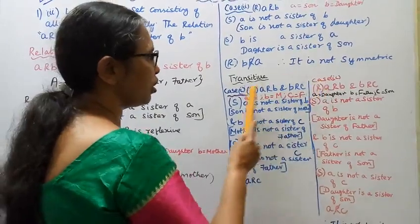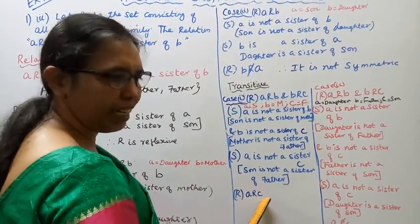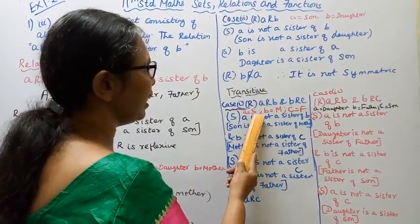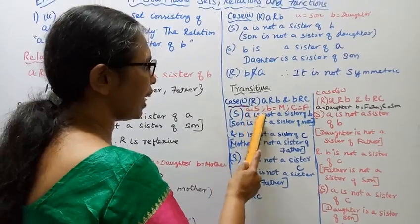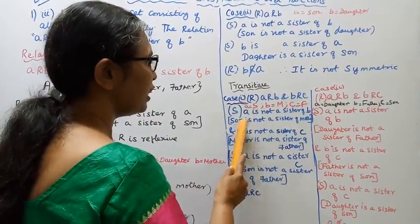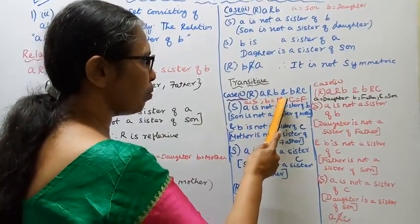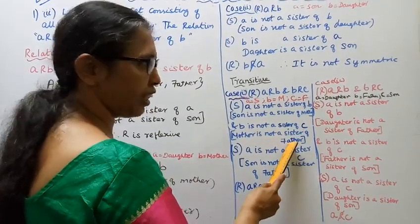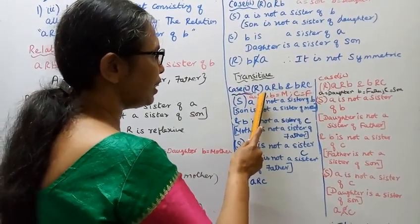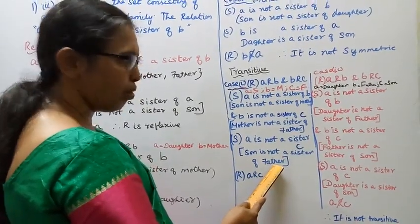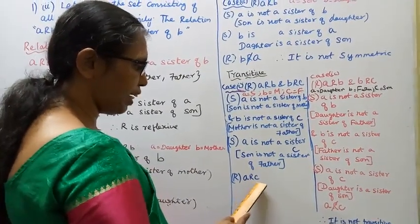For transitivity, we need: if a is related to b and b is related to c, then a is related to c. Let's check: a is not a sister of b, and b is not a sister of c. For example, son is not a sister of father. We check whether a is not a sister of c also holds.